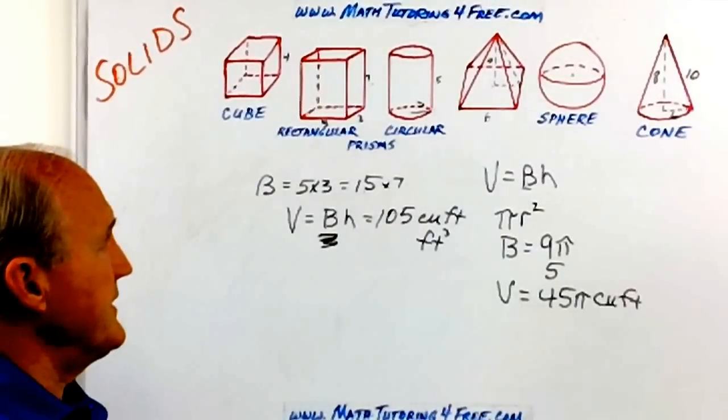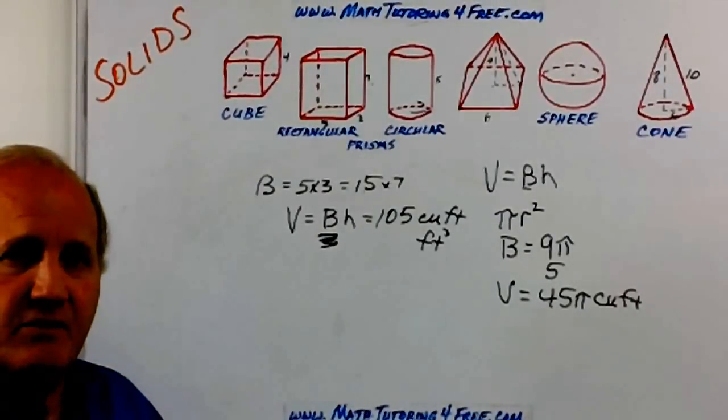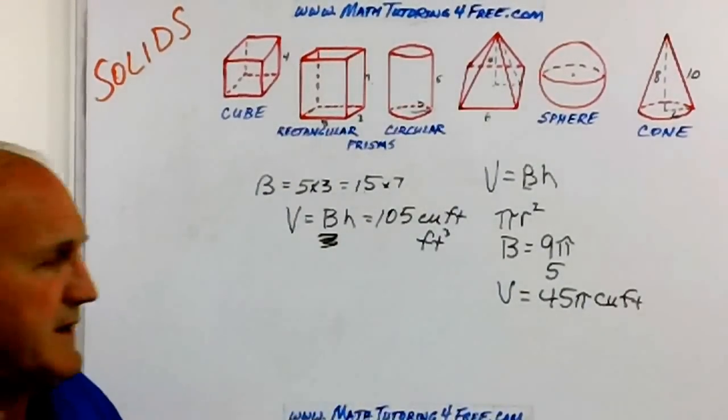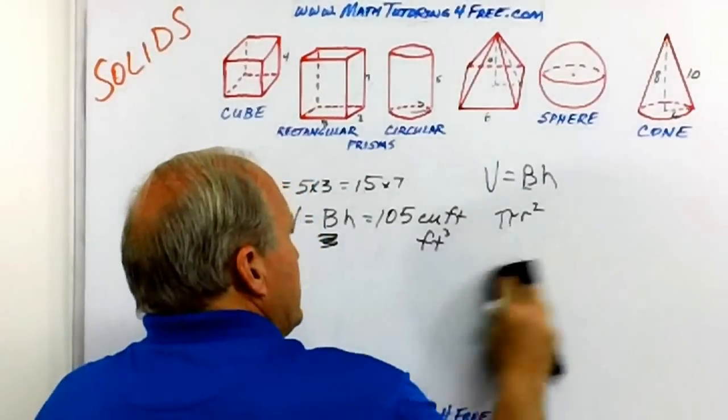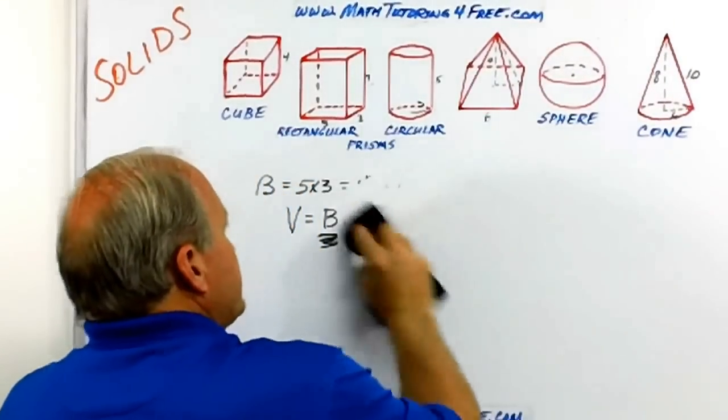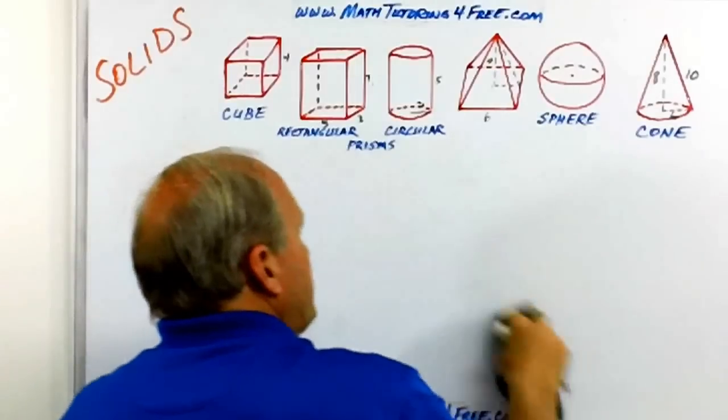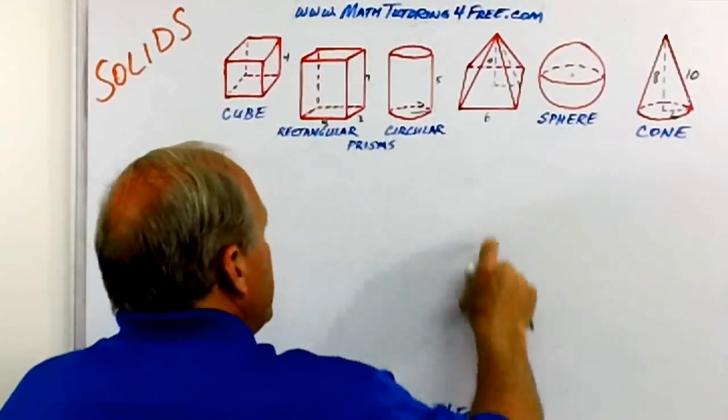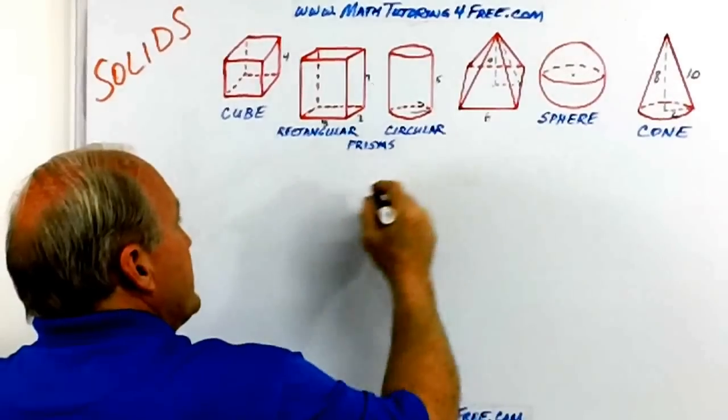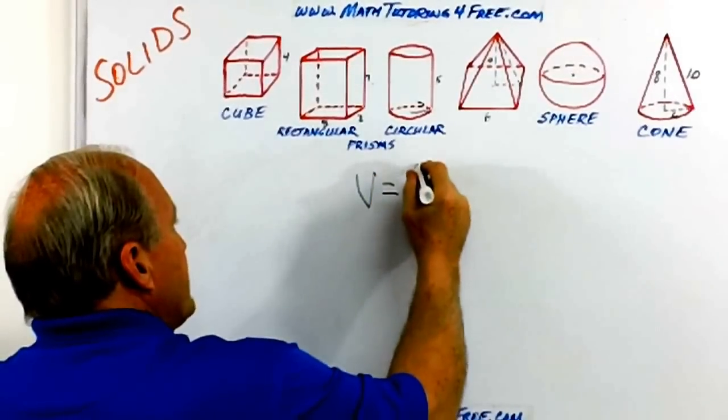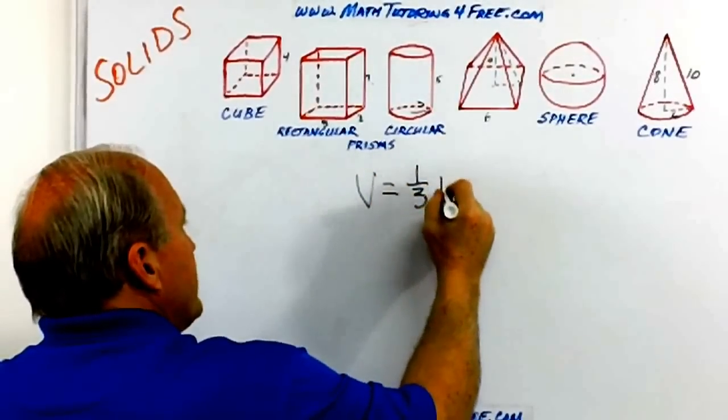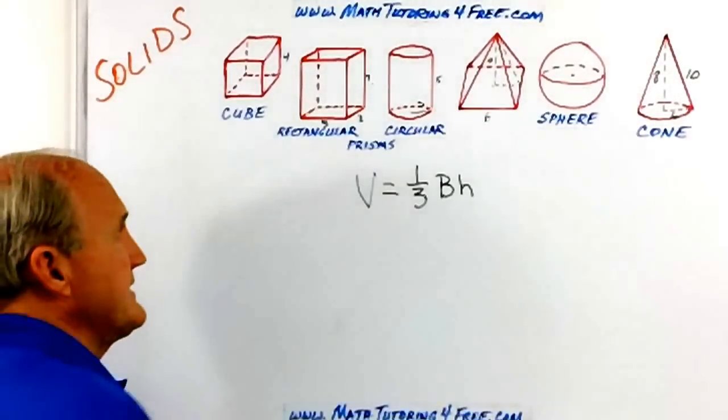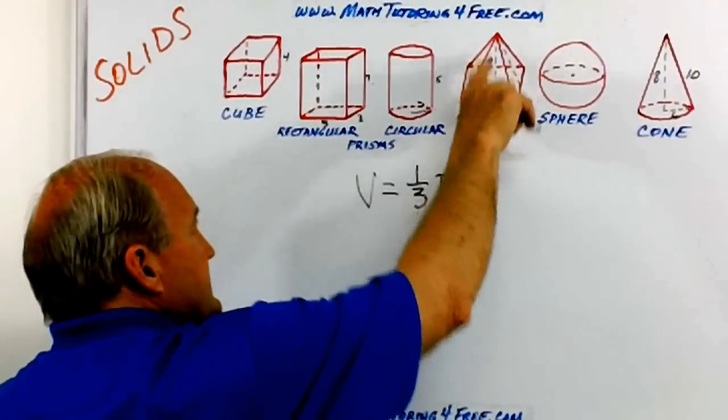How about the pyramid? The pyramid and the cone, in those figures that come to a vertex, come to a point, think one third. In other words, the pyramid in this case, the volume is equal to one third the area of the base times the height. Now that's not the slant height. Don't get that confused, but it's the height of the pyramid.